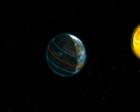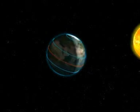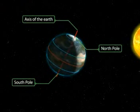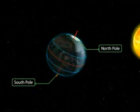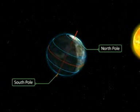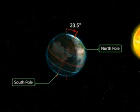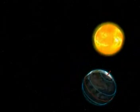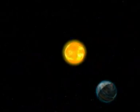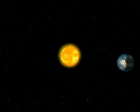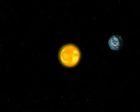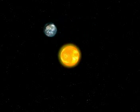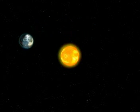The axis of the Earth is an imaginary line on which the Earth rotates. It links up the two poles. Both the axis and the Earth are tilted at an angle of 23.5 degrees during a revolution. The tilting of the axis results in direct sunlight falling on different places during different seasons, causing variations in the duration of days, nights and seasons.